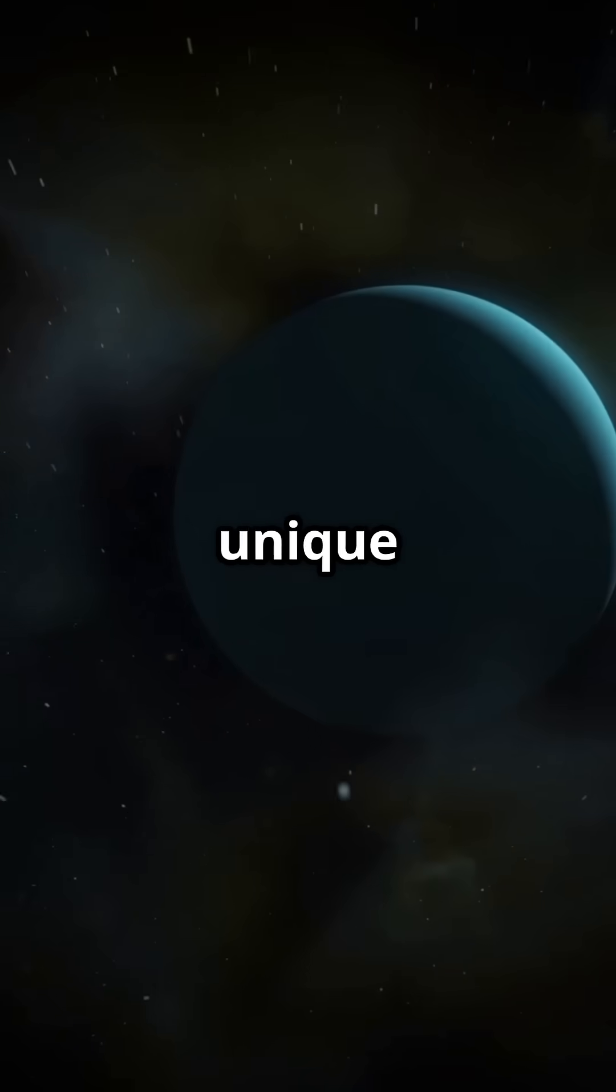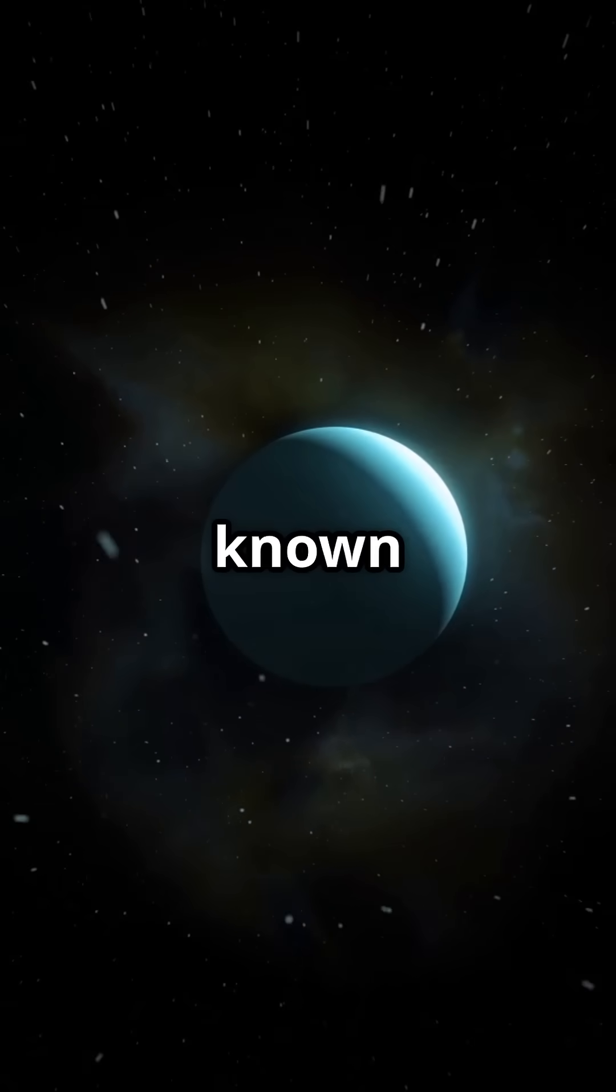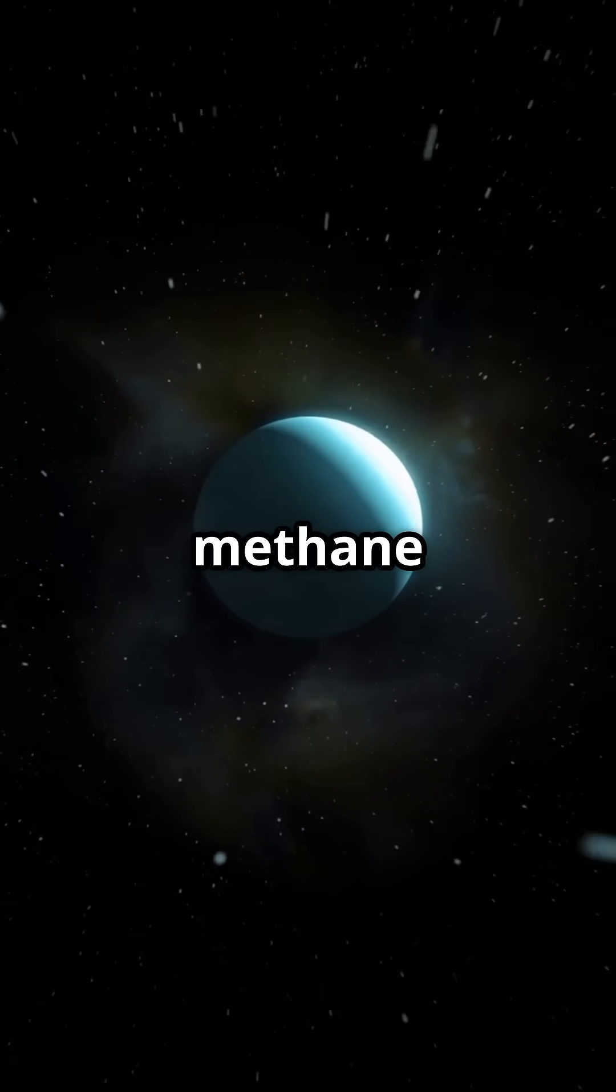Third, we have Uranus. It's unique with its sideways spin. Uranus has a diameter of about 50,000 kilometers and is known for its pale blue color due to methane in its atmosphere.